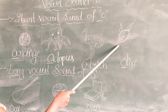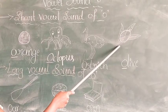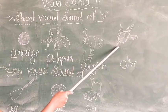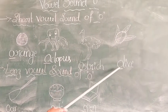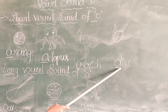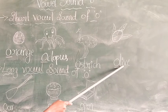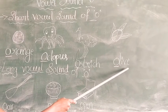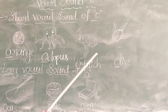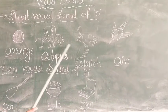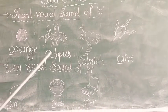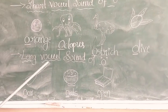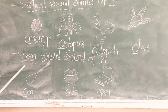The next one: olive. O-L-I-V-E, olive. These are the short mobile sound of O.